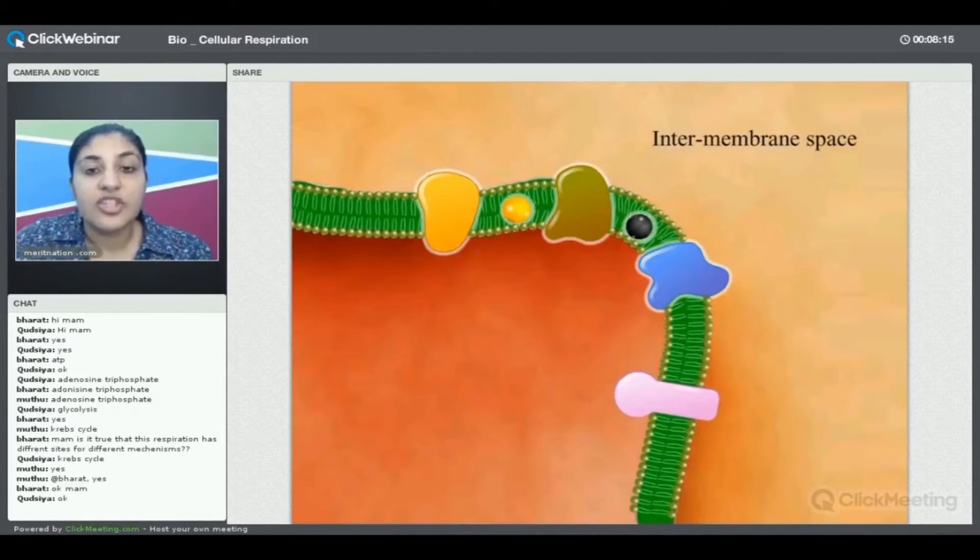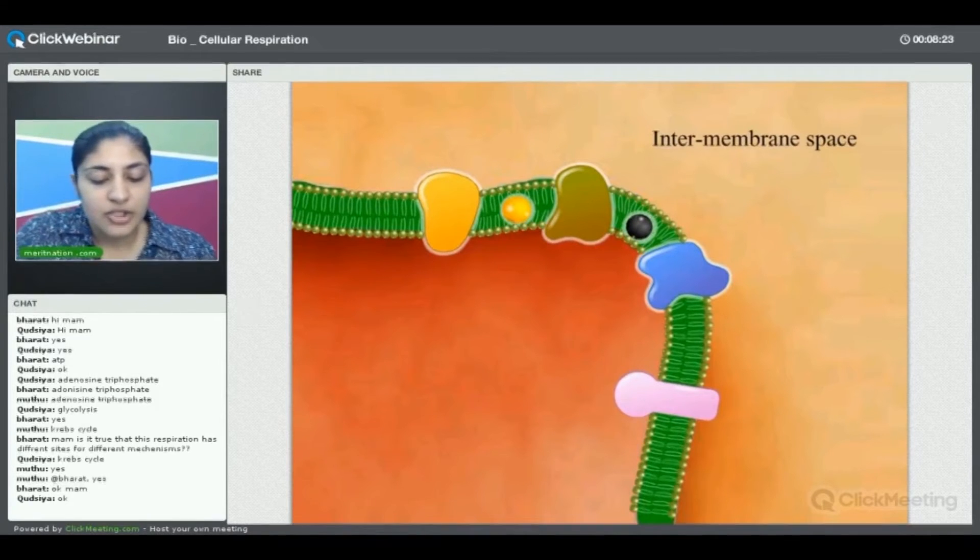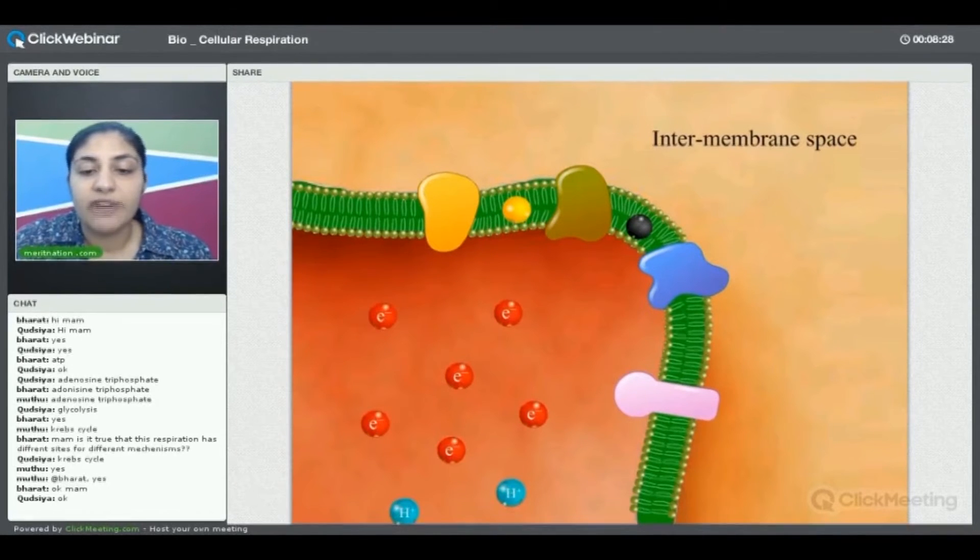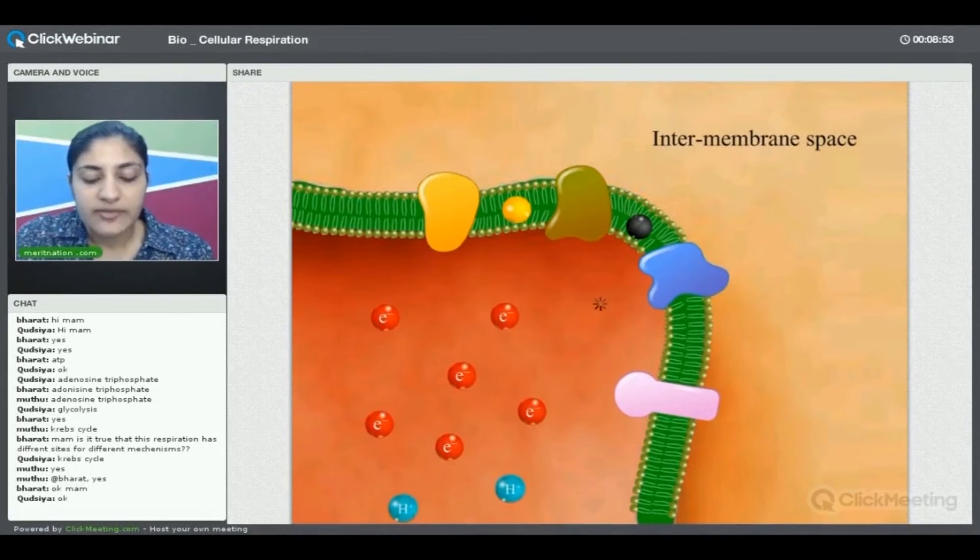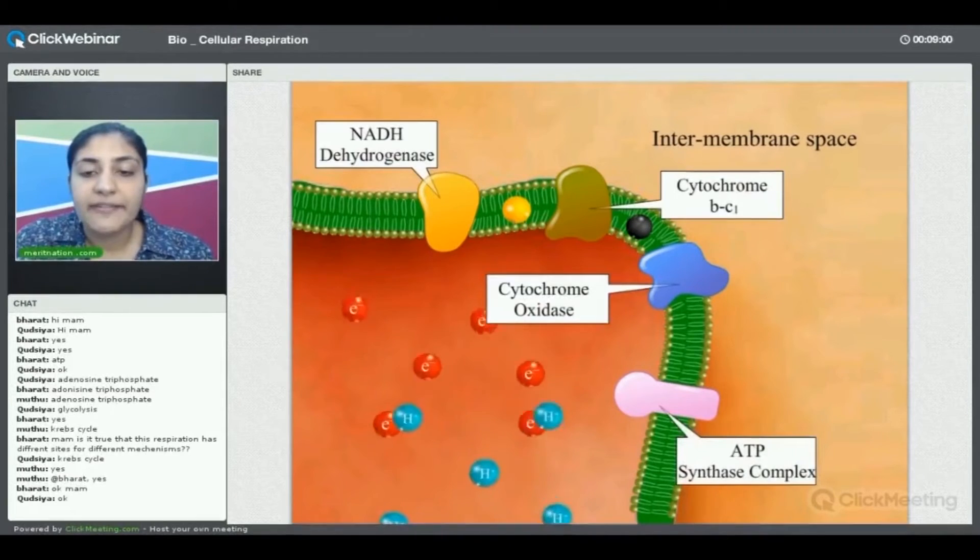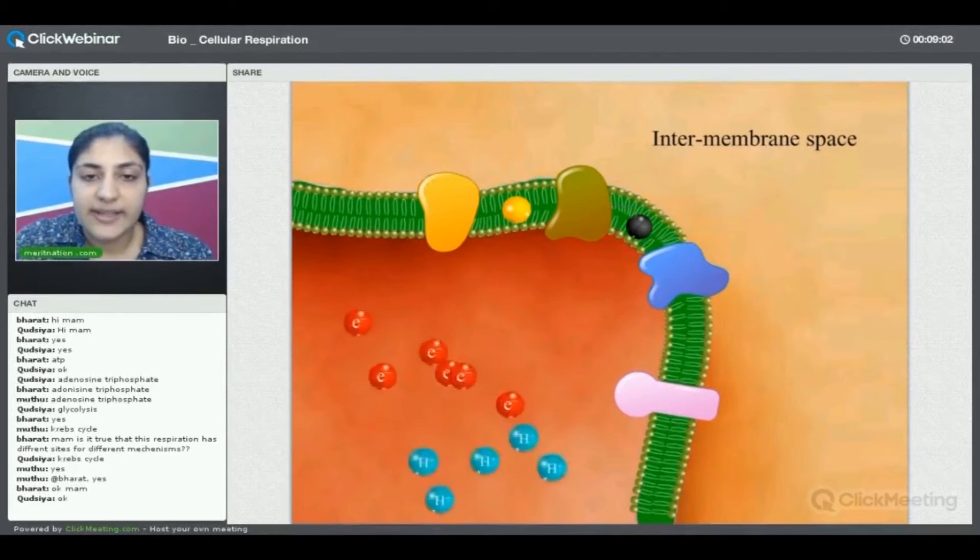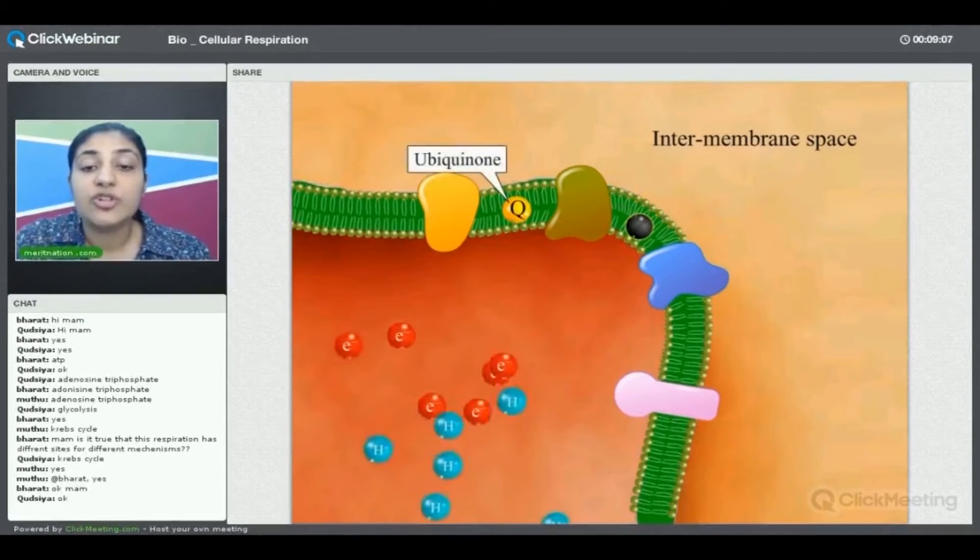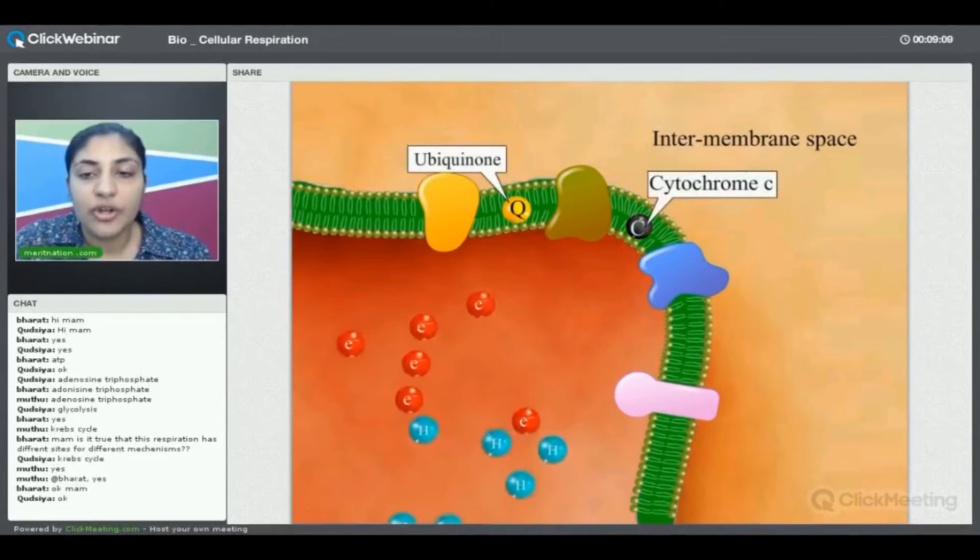I have for you a visualization which will help us understand this electron transport chain in a more easy manner. What you see in front of you is the inner membrane area of the mitochondria. We have a lot of participating molecules in the system. We have NADH dehydrogenase, we have cytochrome BC1, we have cytochrome oxidase.